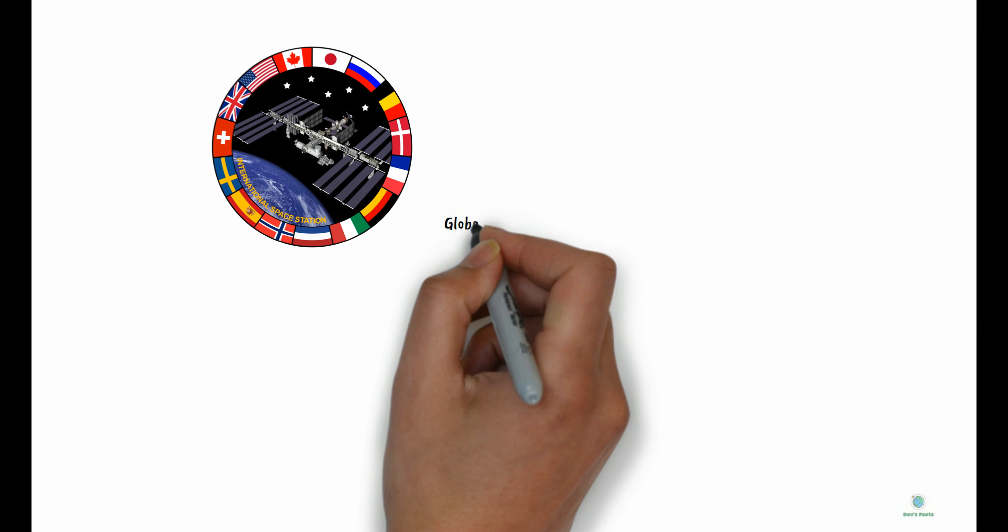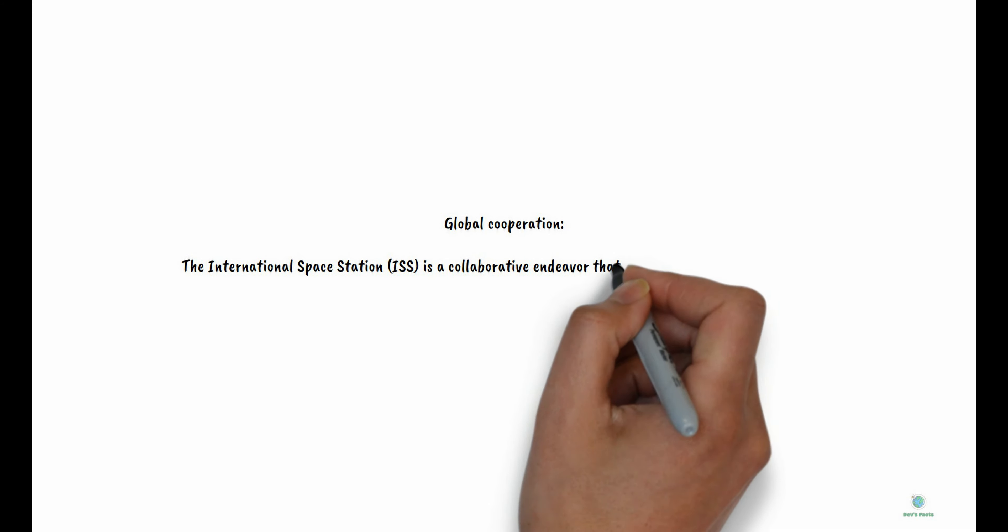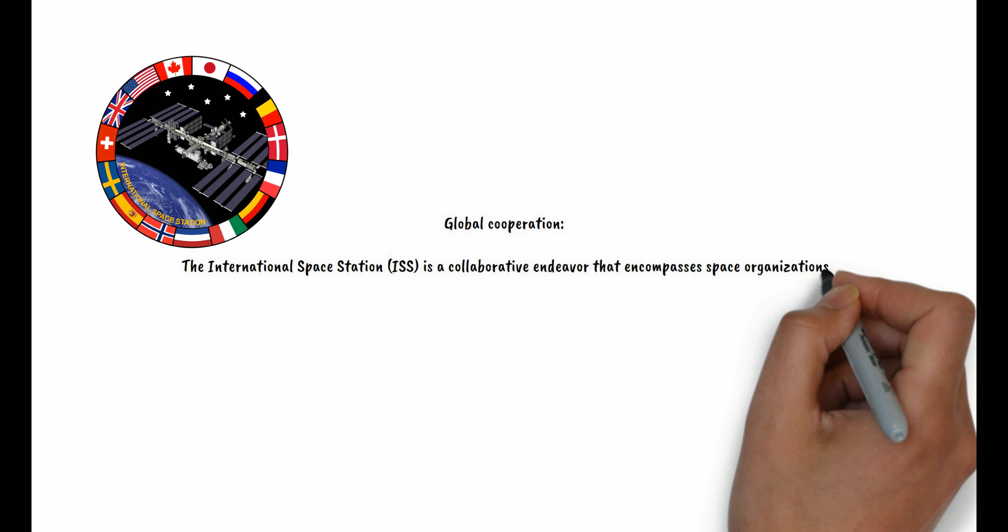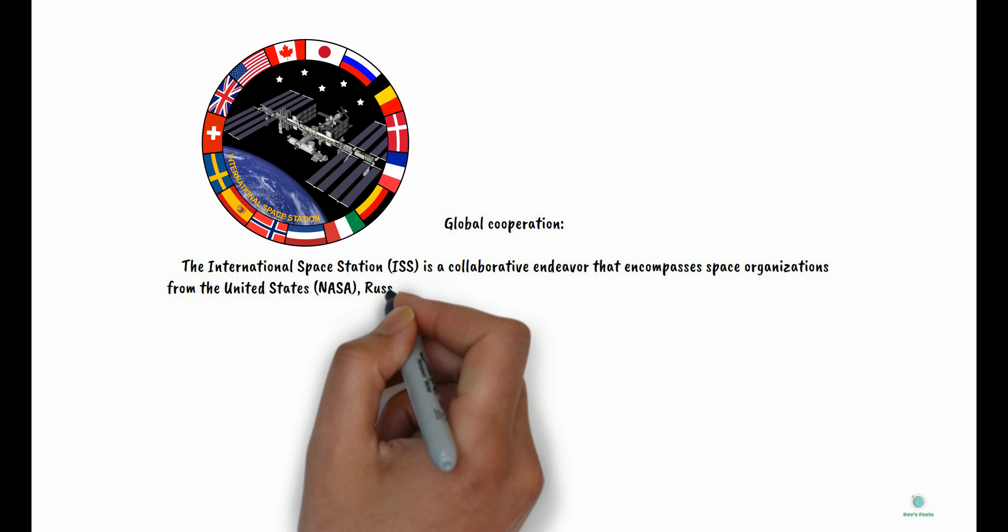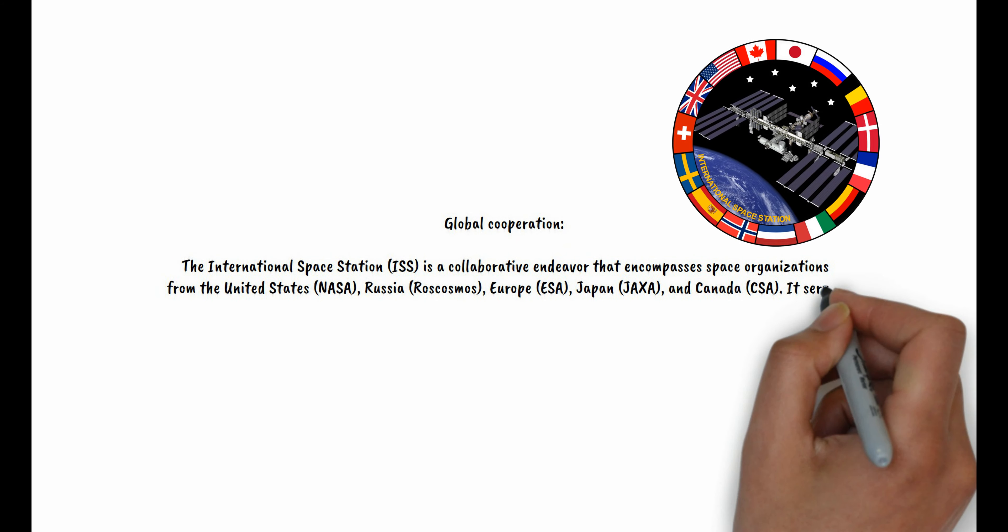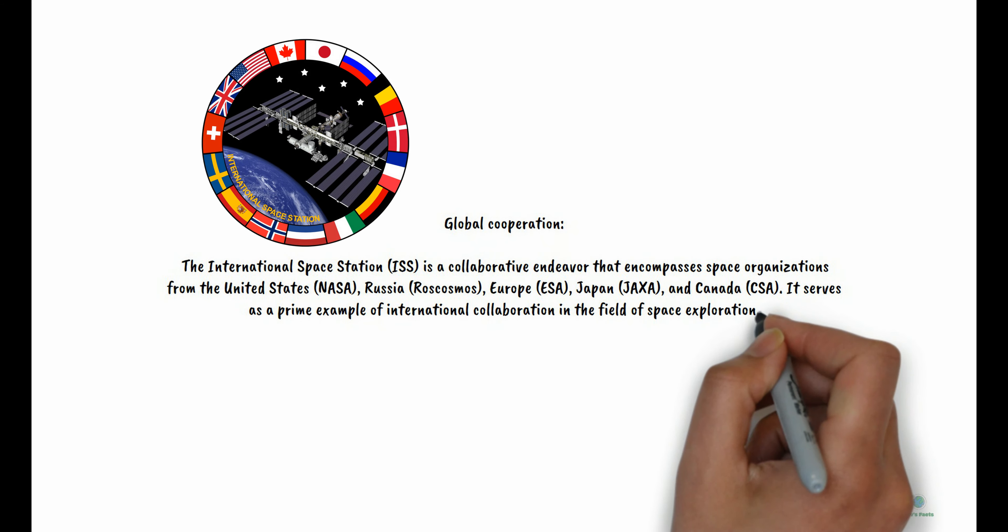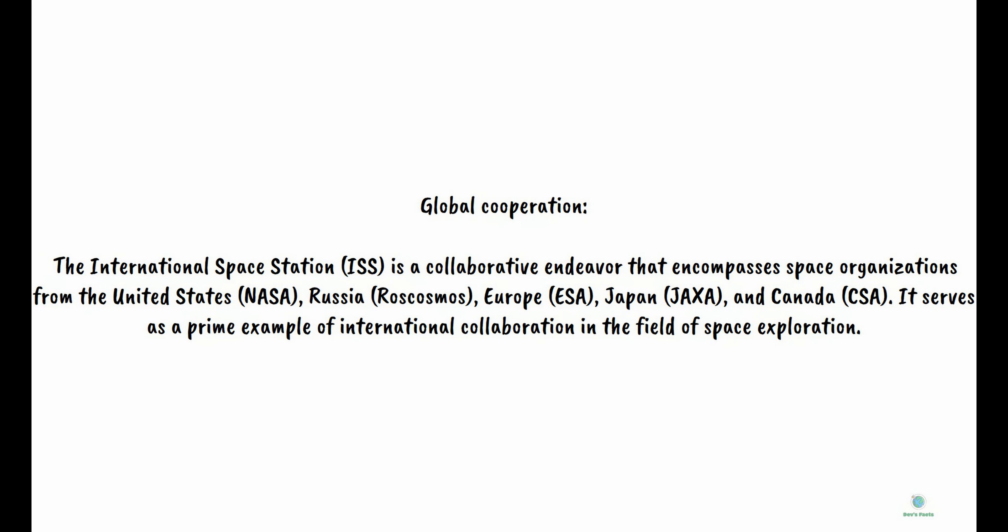Global Cooperation: The International Space Station is a collaborative endeavor encompassing space organizations from the United States (NASA), Russia (Roscosmos), Europe (ESA), Japan (JAXA), and Canada (CSA). It serves as a prime example of international collaboration in space exploration.